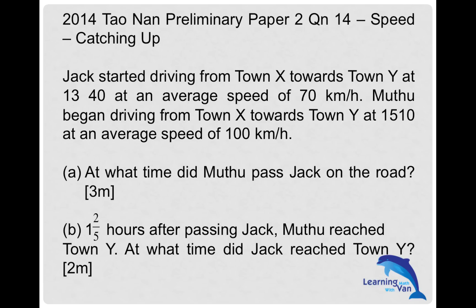Let's take a look at this question. This is from the 2014 Town On Preliminary Paper 2, Question 14. Jack started driving from Town X towards Town Y at 1340 at an average speed of 70 kilometers per hour. Mutu began driving from Town X towards Town Y at 1510 at an average speed of 100 kilometers per hour. At what time did Mutu pass Jack on the road? And two: one and two-fifth hours after passing Jack, Mutu reached Town Y — at what time did Jack reach Town Y?